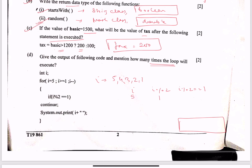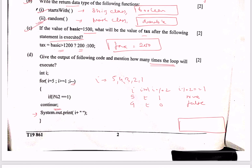For i=5: 5 % 2 == 1 is true, so we hit continue and skip printing. For i=4: 4 >= 1 is true, 4 % 2 is 0 so the condition is false — we do not continue, so i=4 is printed with a space. There is no println so we don't change the line. For i=3: 3 % 2 == 1 is true, so we continue and skip printing.